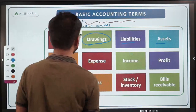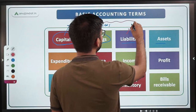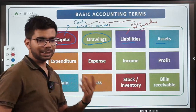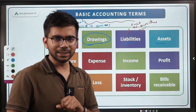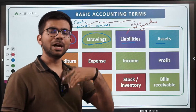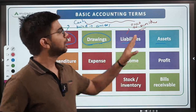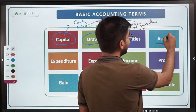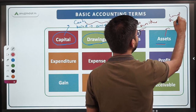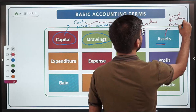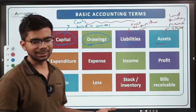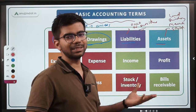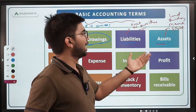Liabilities are what you owe to outsiders — if you have purchased goods on credit, you have to make future payment to that person or company, and that becomes your liability. Assets are things you own — land, building, machinery, stock of goods. Assets increase the earning capacity of the business; through assets only you are able to earn revenue.